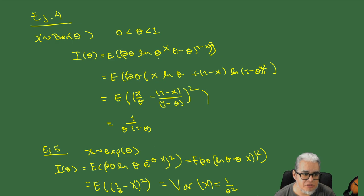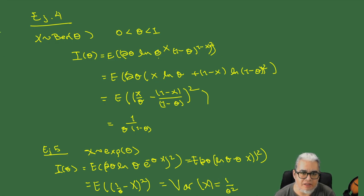Vimos un par de ejemplos de algunos cálculos. La información de la Bernoulli con parámetro theta es 1 sobre theta por 1 menos theta. Y la de la exponencial es la varianza de X, que como está parametrizada con theta, es 1 sobre theta cuadrada.